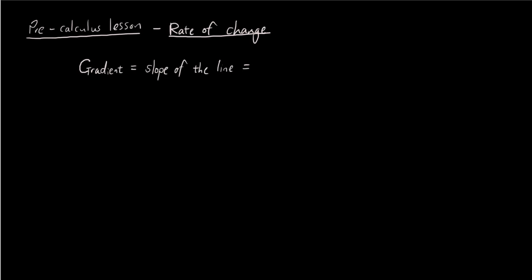And it's also the same thing as, well, we gave it a symbol m, the gradient, which is the slope of the line, which is also the same thing as change in y over change in x. Or you can say it's rise over run between two points. Or you can say it's y₂ minus y₁ over x₂ minus x₁.